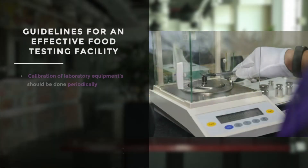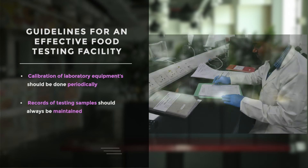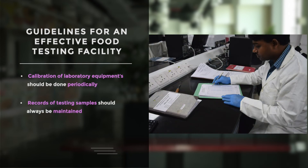As per the conditions of the FSSAI license, the food business operator should ensure testing of all relevant chemical and microbiological contaminants in food products. This is to ensure the production and delivery of safe food through their own, NABL accredited, or FSSAI notified labs at least once in 6 months. The calibration of laboratory equipment should also be done periodically, and records of all testings of samples should always be maintained.